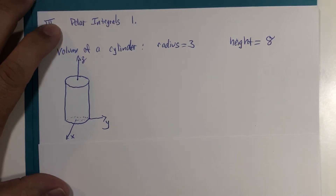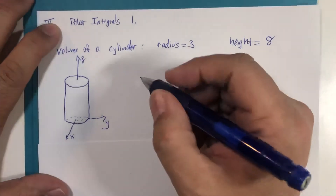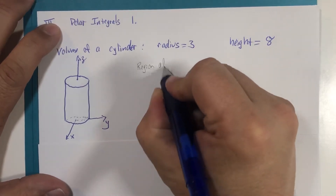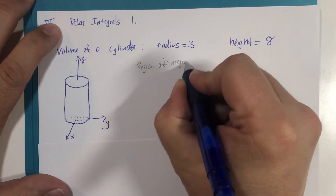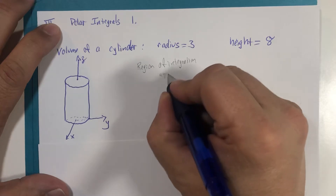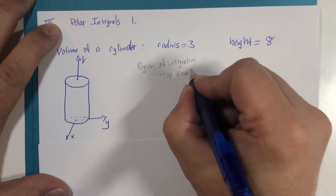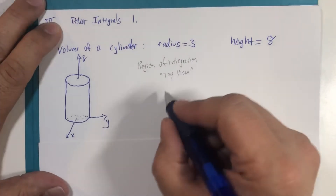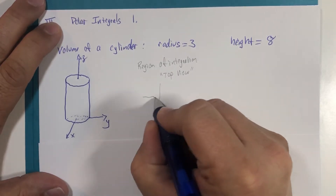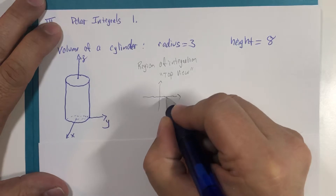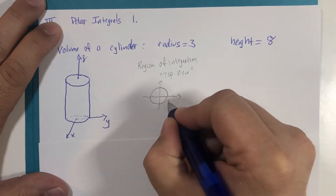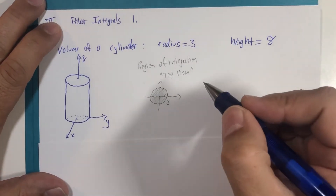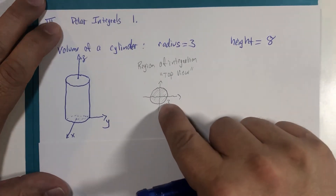Remember when we're setting up a double integral, we have a couple of things to keep in mind. The region of integration is really the top view — as I've been calling it — it's the foundation we're building our structure on. So the top view of this should just be a circle of radius 3. This cylinder sits in the third dimension, but on top of this circle foundation.